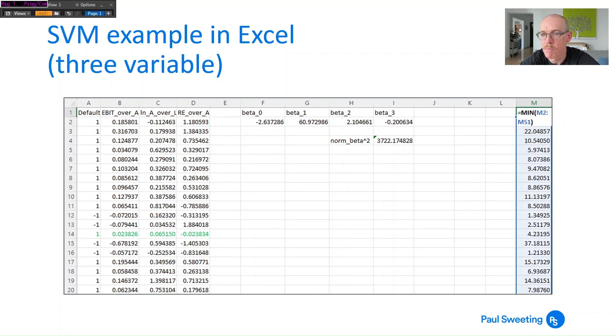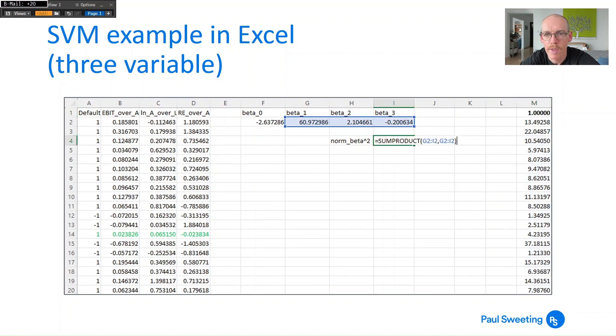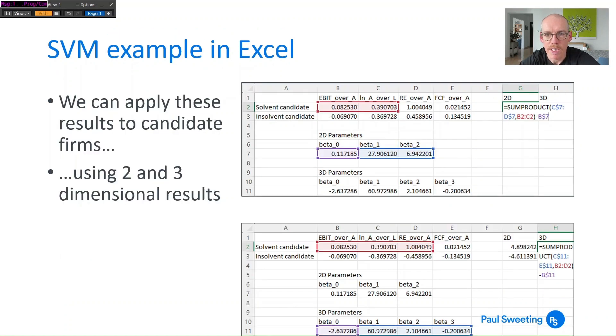You're still looking at the minimum of those which you want to constrain to being greater than one and the norm squared that you're looking at is now over three variables β₁, β₂ and β₃. So again it's essentially g2² plus h2² plus i2². And all you need to do is just carry out the same analysis that you did before to find the line.